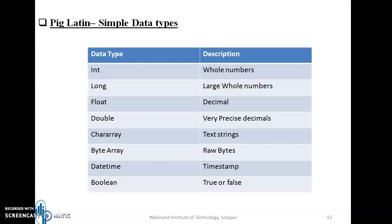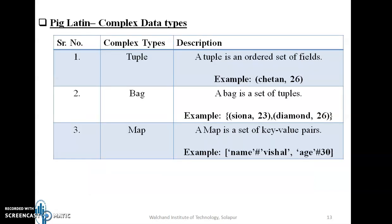Now let's see data types in PigLatin. The simple data types are: integer, long, float, double, character array, byte array, datetime, and boolean. There are three types of complex data types in PigLatin: tuple, which is an ordered set of fields; bag, which is a set of tuples; and map, which is a set of key-value pairs.